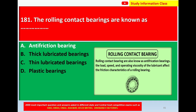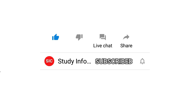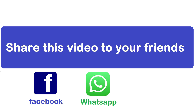The load, speed, and operating viscosity of the lubricant affect the friction characteristics of rolling bearings. This is the diagram of a rolling contact bearing. For question 181, the correct answer is option A: anti-friction bearing.